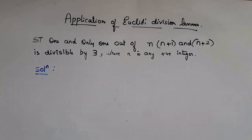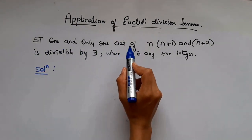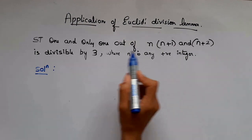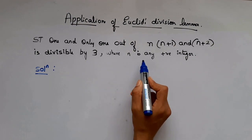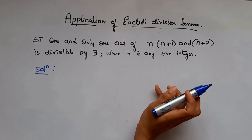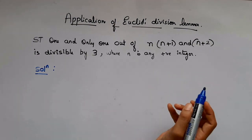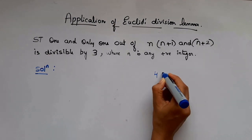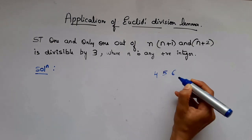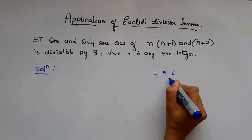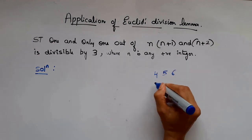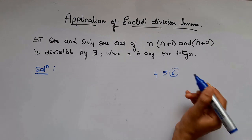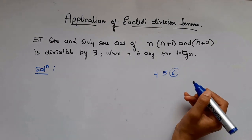Now let's see this problem: show that 1 and only 1 out of n, n+1, and n+2 is divisible by 3, where n is any positive integer. It says in any 3 consecutive numbers — say 4, 5, and 6 — there is only 1 number out of these 3 which is divisible by 3. In this case, 6 is the only one divisible by 3.